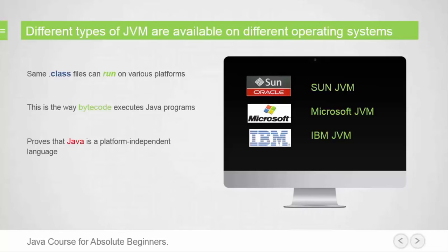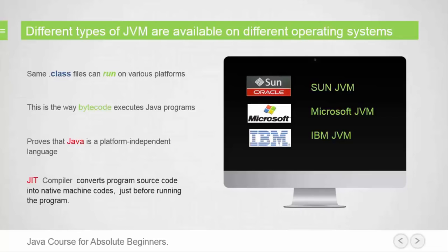What is the JIT compiler? The JIT compiler is a compiler that converts program source code into native machine code just before running the program. The JIT compiler is faster and more efficient for performing large applications.